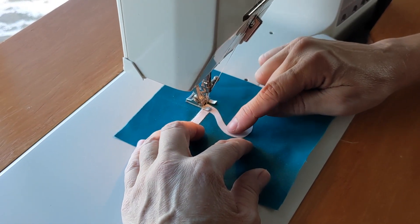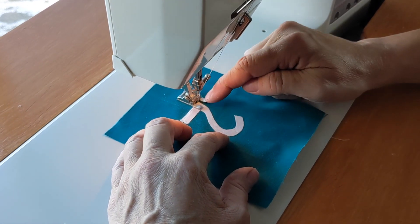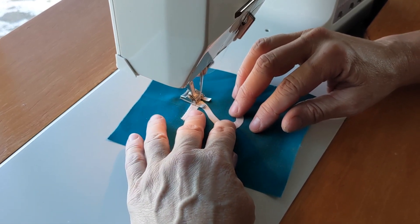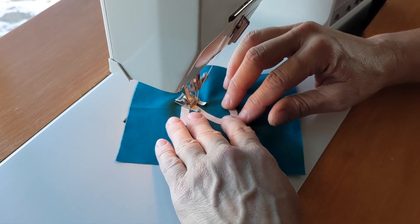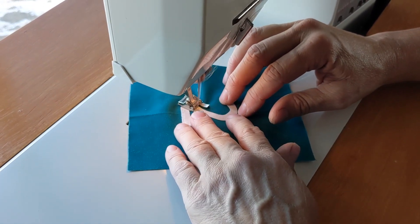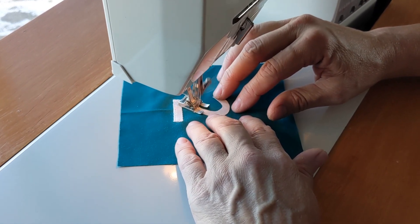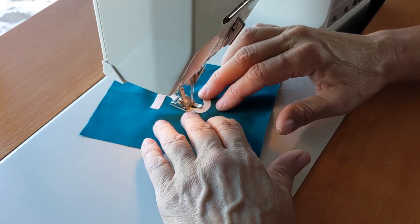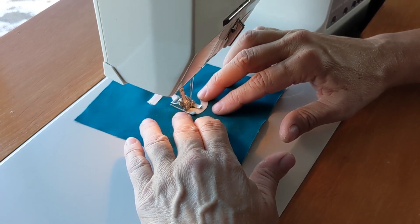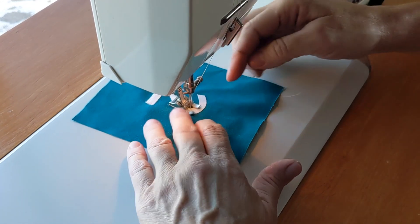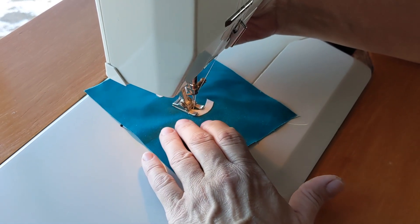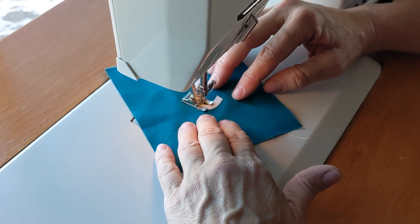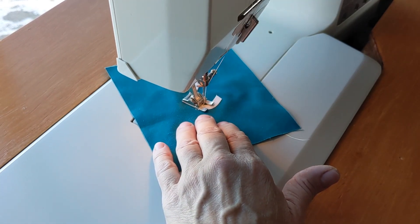So now I'm just going to work on this curve. You can sort of zip along on a straight edge, but on the curve, you want to take your time so that you don't get off your white. Now I've gotten to a place where it's kind of tight, and I'm not going to be able to really turn while I'm moving, so I'm just going to stop my machine, leave my needle down, and pivot my fabric. And I might need to do that a couple times in this top curve.